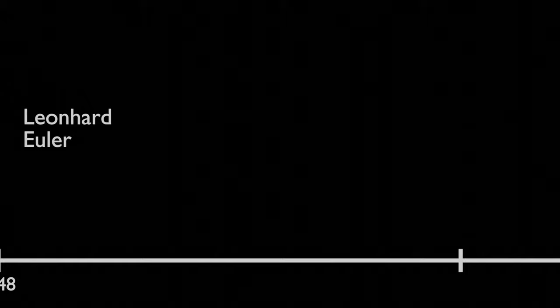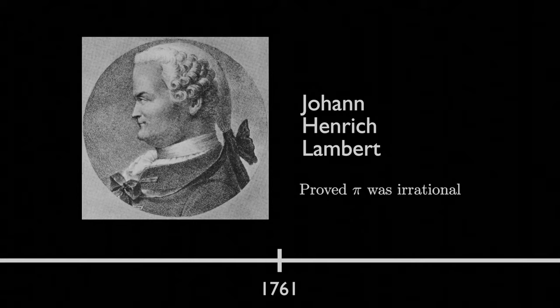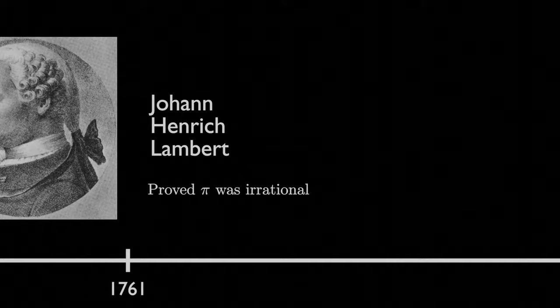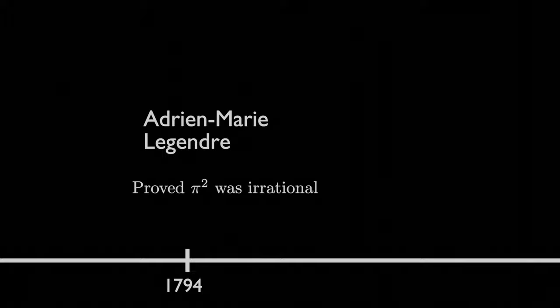Further understanding of Pi came in 1761 from another Swiss mathematician, Johann Heinrich Lambert, who proved that Pi was irrational, or rather that Pi could not be the ratio of two integers. Then, before the turn of the 18th century, another famous mathematician, Adrien-Marie Legendre, would improve upon this knowledge and prove that Pi squared was also irrational.